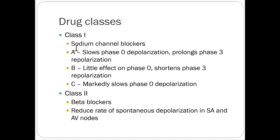Drugs are class 1, 2, 3, and 4. Class 1 and 3 are the big antiarrhythmics. Class 2 and 4 aren't necessarily antiarrhythmics per se. Class 1 are sodium channel blockers, and there are three different groups: class 1A, B, and C — they all do slightly different things.